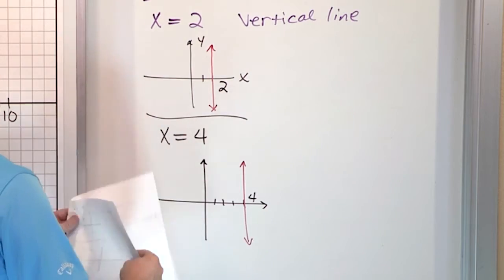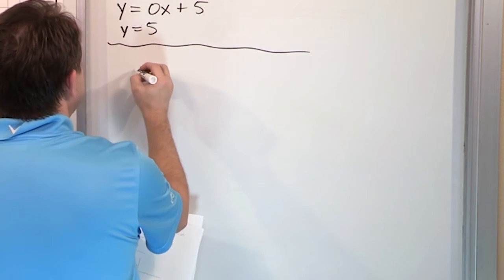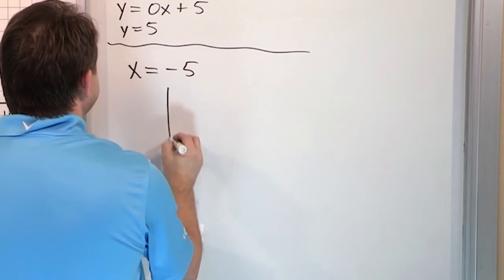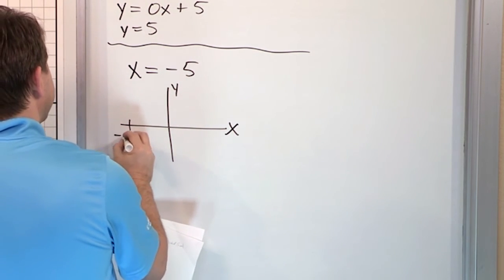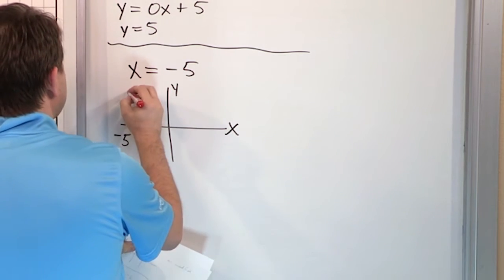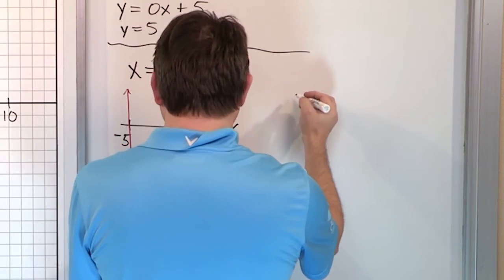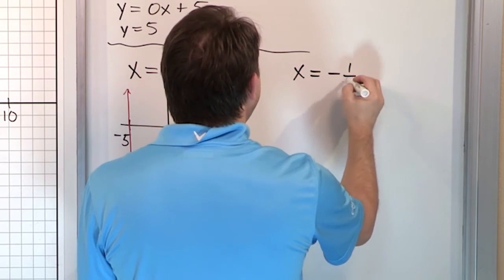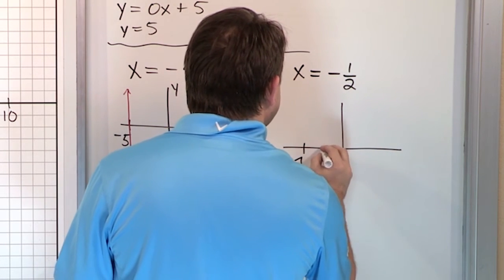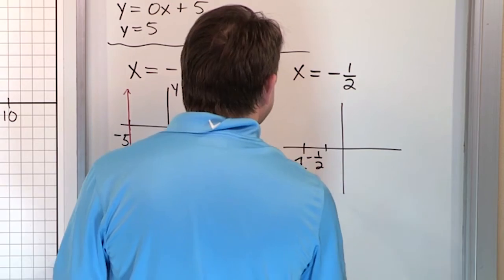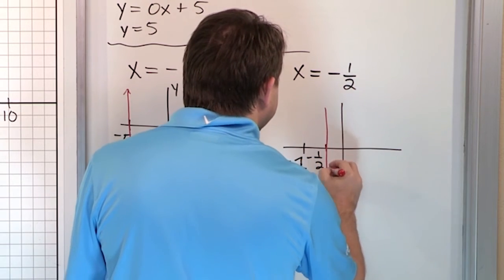Two more examples: what if you have x equals negative 5? Here's x and y, and counting to negative 5 on the x-axis, you're going to have a vertical line that goes right through that point. And finally, what if you have x equals negative one half? If negative one half is between 0 and negative 1 on the x-axis, then the vertical line goes right through there.